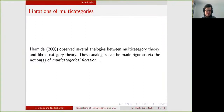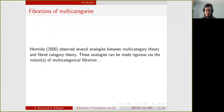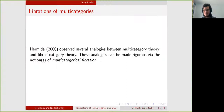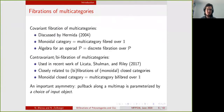At the beginning of the millennium, Hermida observed that there are a lot of analogies between multi-category theory on one hand and fibred category theory. If you go to his nice paper, you will see a table that recaps all these analogies. To make this rigorous, he introduced the notion of multi-categorical fibration — more precisely, of covariant fibration of multi-categories.